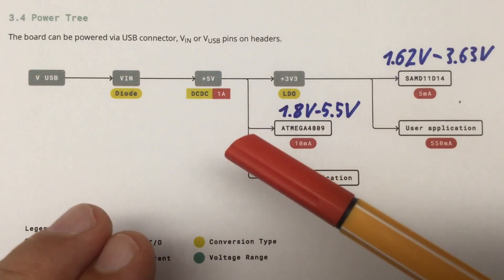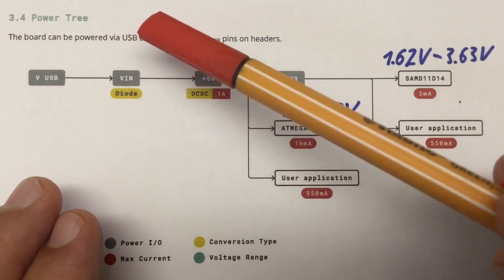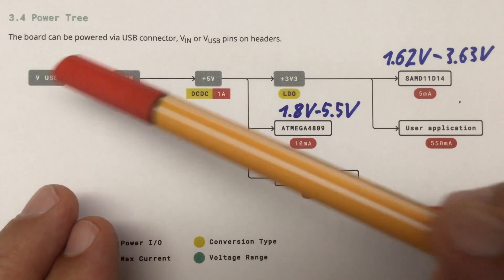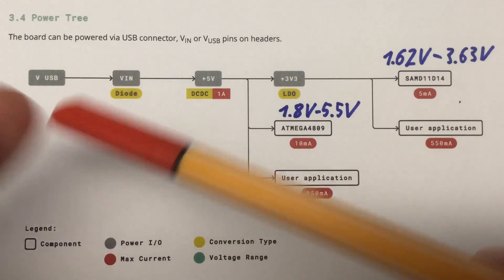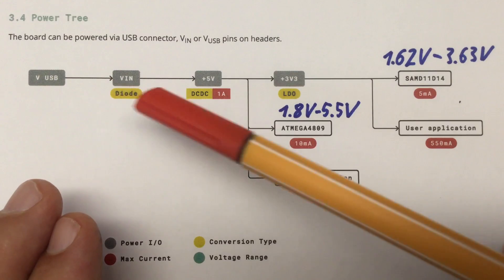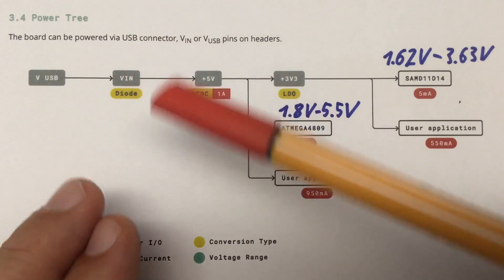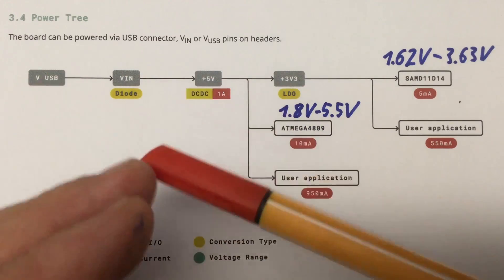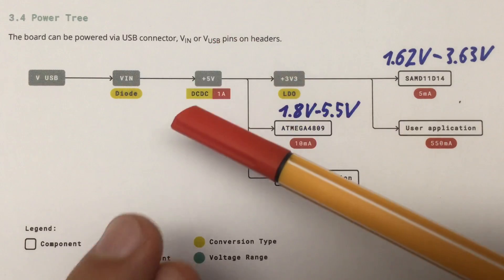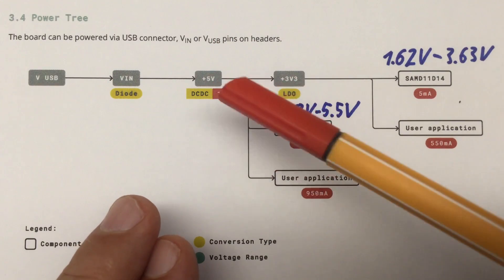Let's first talk about the power supply architecture, or how they call it in the Arduino Nano datasheet, a power tree. The USB comes in here and that should be around about 5 volts. That's decoupled by a diode, more specifically a Schottky diode, from your V-in pin where you can feed in between 7 and 21 volts.